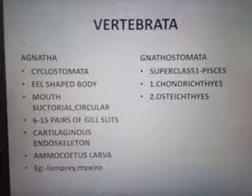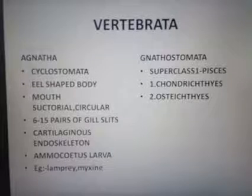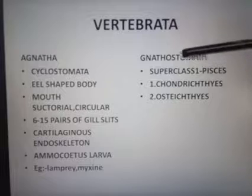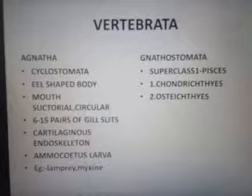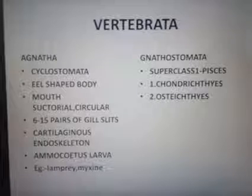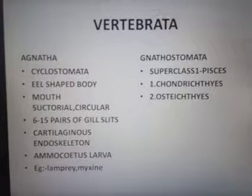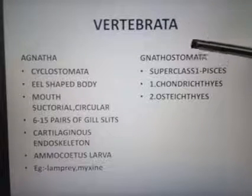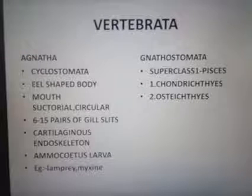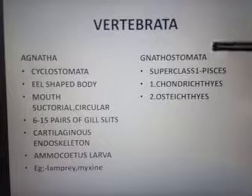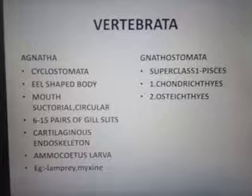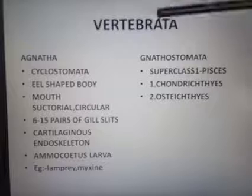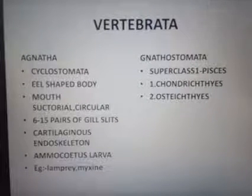Vertebrata is a part of Chordata and is again divided into two groups: Agnatha and Gnathostomata. Agnatha means without a jaw, while Gnathostomata have a jaw. Chordata is the phylum, Vertebrata is the subphylum, and Agnatha and Gnathostomata are the divisions. The division Agnatha contains the class Cyclostomata, and Gnathostomata contains the classes Pisces and Tetrapoda.